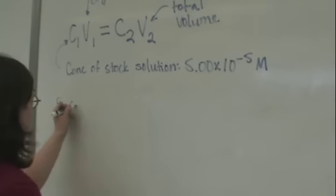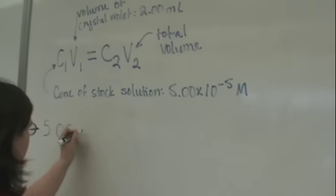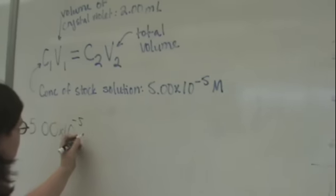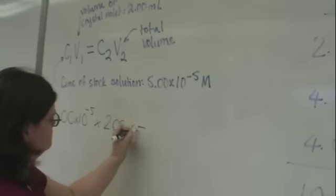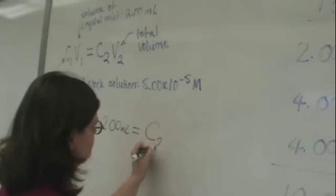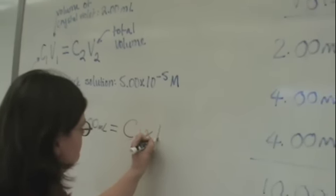Now we will solve for C2 using the volumes and concentrations that we know. So we know the concentration of the stock is 5.00 times 10 to the minus 5 molar, and we have 2 mLs of that solution.